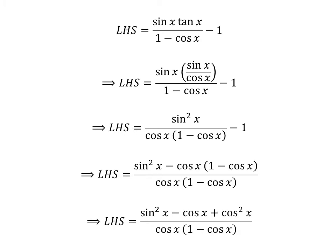Straight multiplication gives us: the left hand side of the identity is equal to square of sine of x minus cosine of x plus square of cosine of x, upon cosine of x times 1 minus cosine of x.